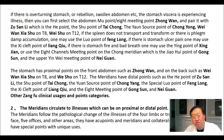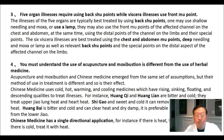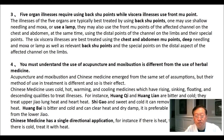Two: meridians circulate to illnesses which can be treated on proximal or distal points. The meridians follow the pathological change of the illness of the forelimbs or trunk, joints, head and face, five offices, and other areas, with acupoints and meridians and collaterals which are distal and have special points with unique uses. Three: five organs illnesses require using back shu points while viscera illnesses use front mu points. The illnesses of the five organs are typically best treated using back shu points with shallow needling and moxa or lamp, and also using the front mu points of the affected channel on the chest and abdomen, along with distal points on the limbs. The six viscera illnesses are best treated using chest and abdomen mu points, deep needling and moxa or lamp, as well as relevant back shu points and special points on the distal aspect of the affected channel on the limbs.